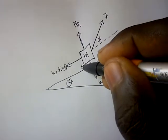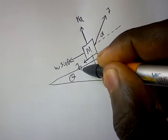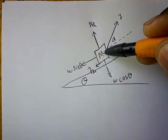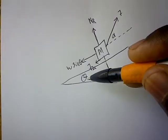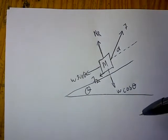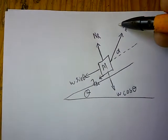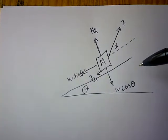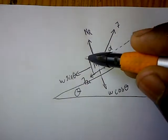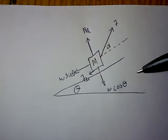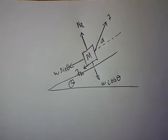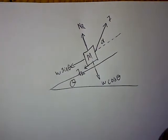A frictional force always opposes the direction of motion. If the body is going upward, then our frictional force will go downward. These are the forces that act on a body at an inclined plane. To calculate the force F, the question says: calculate the smallest force F required to move the body if it is moving at constant acceleration.